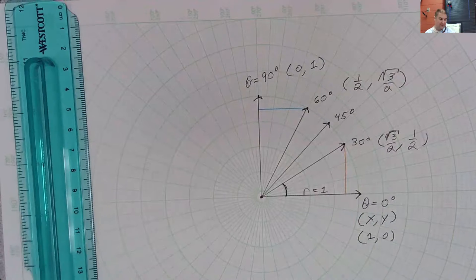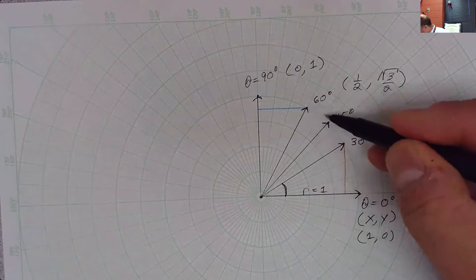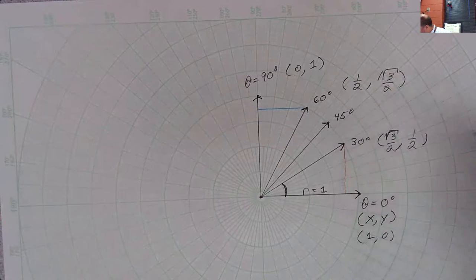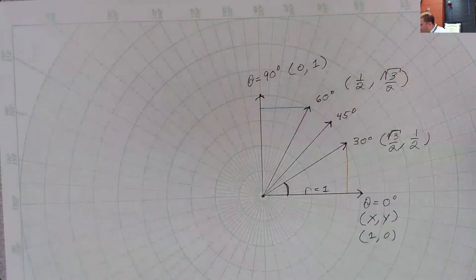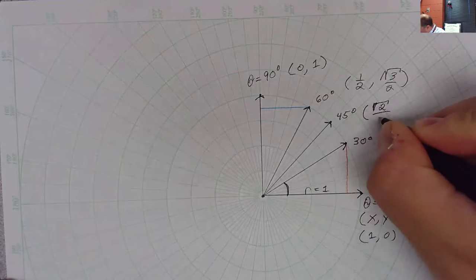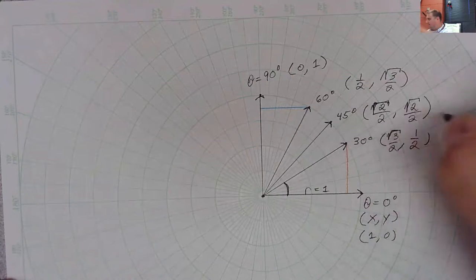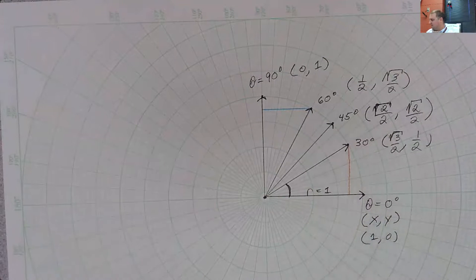45 degrees. Notice how this is past the halfway point on the X and also past the halfway point on the Y for 45 degrees. This is going to be the square root of two over two comma square root of two over two for our exact values.